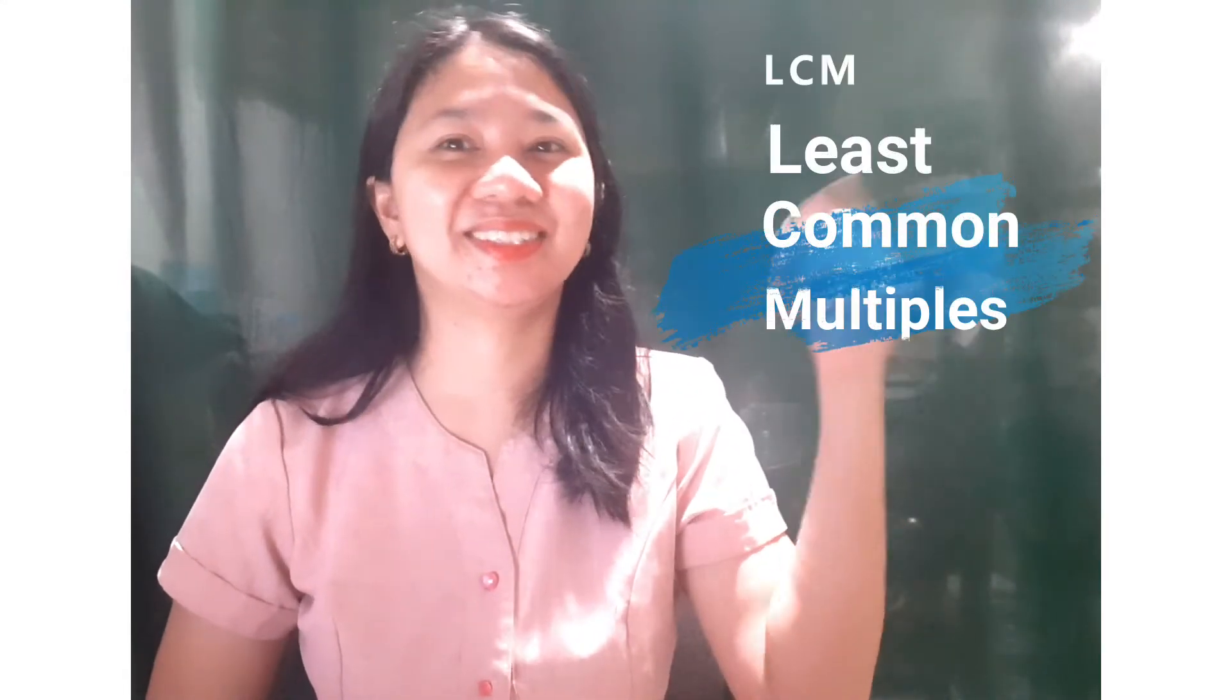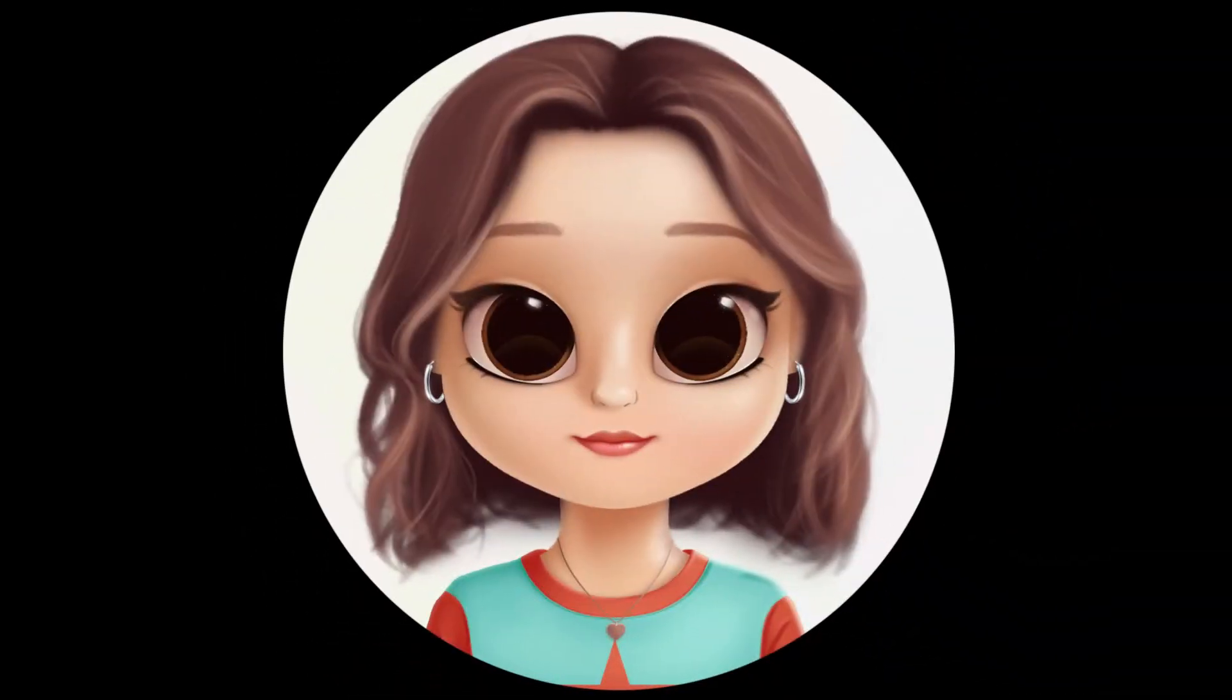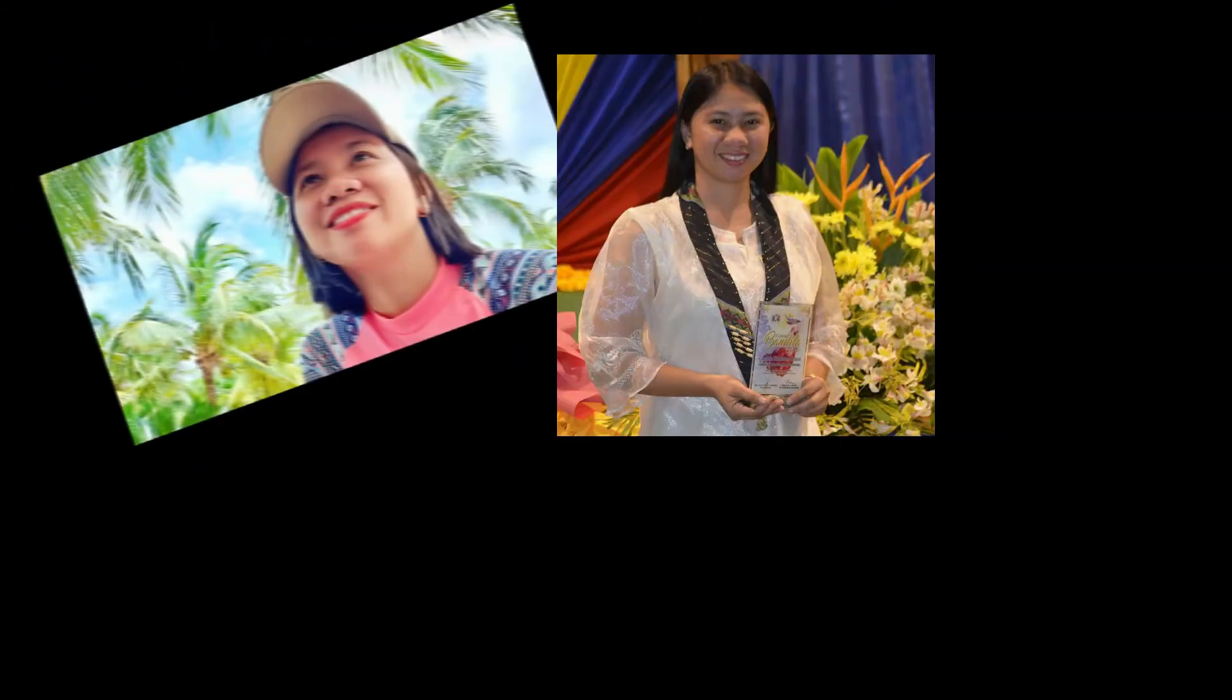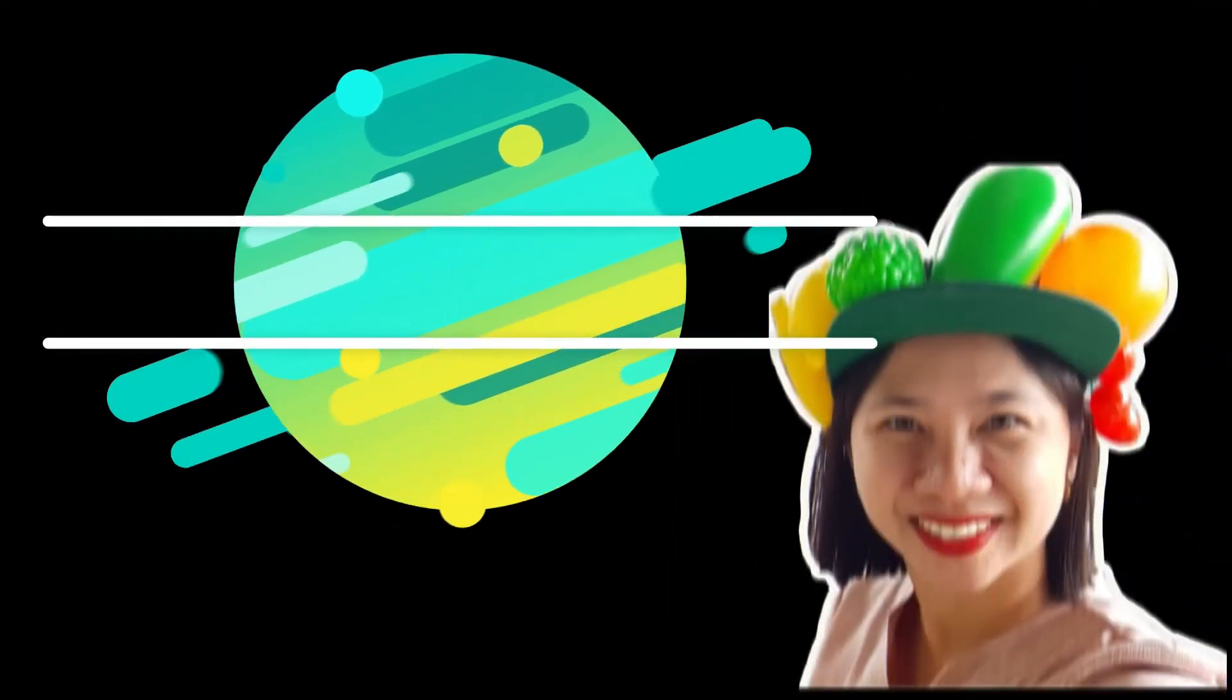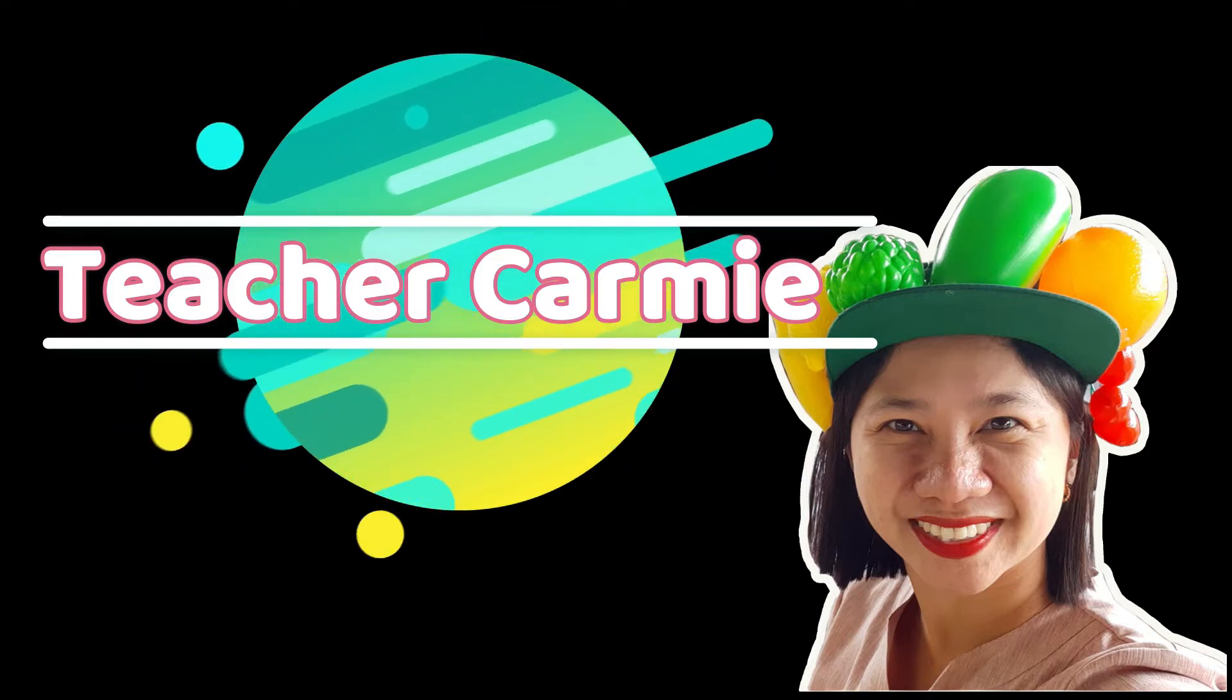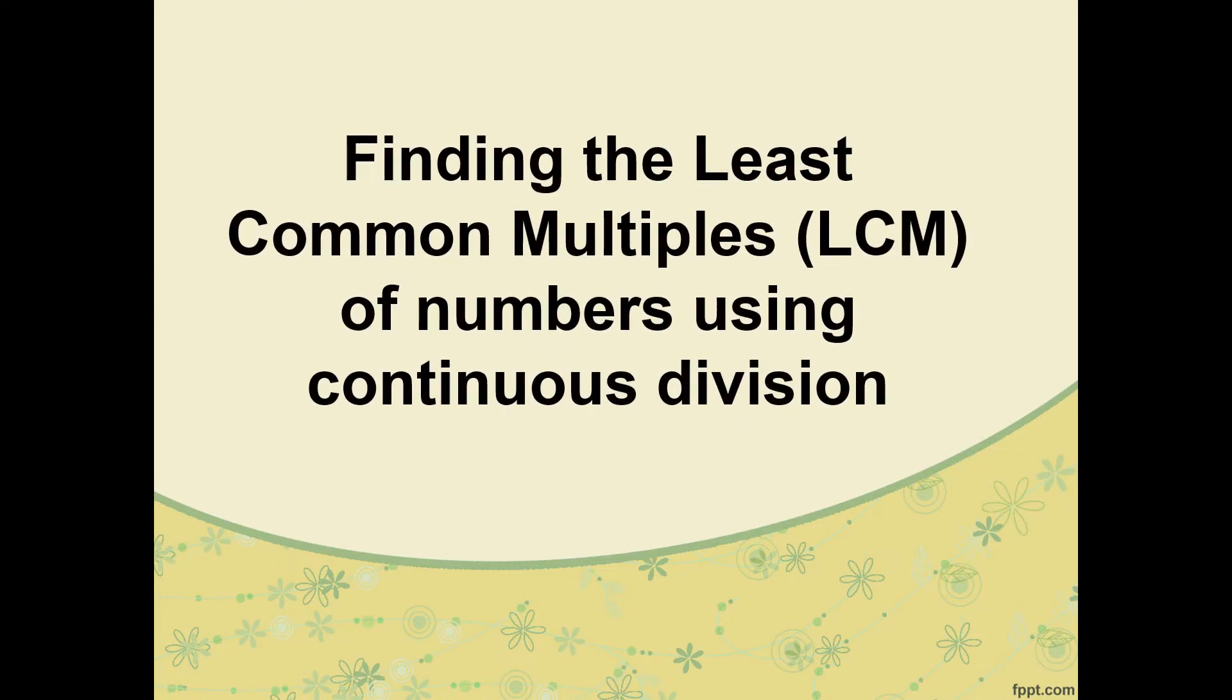After we discuss the GCF or the Greatest Common Factor, today we will discuss the LCM or the Least Common Multiple. After finding the GCF, we will discuss how to find the Least Common Multiple or LCM of numbers using continuous division.